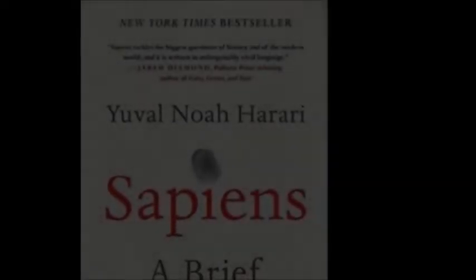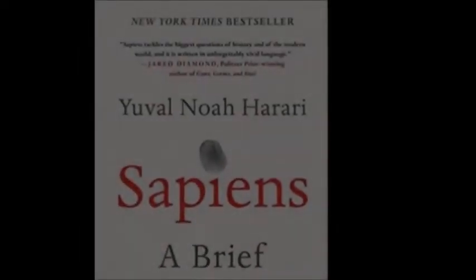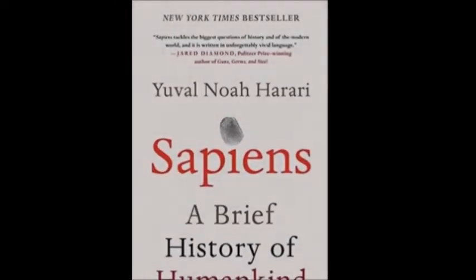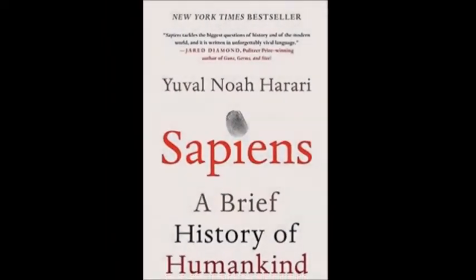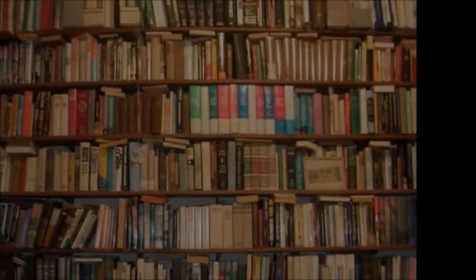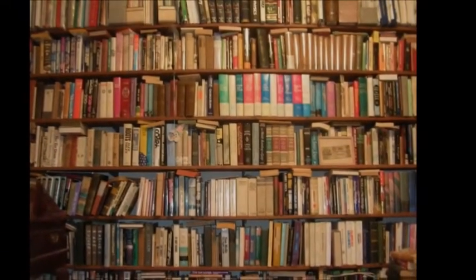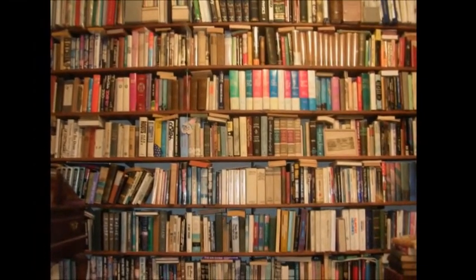Coming in at number two, we have Sapiens: A Brief History of Humankind by Yuval Noah Harari. Sapiens is a book about mankind and why Homo sapiens are so successful, as well as Yuval Noah Harari's thoughts on how things would be if we did things a little different, and things that he thinks humans would have been better off not even starting at all.